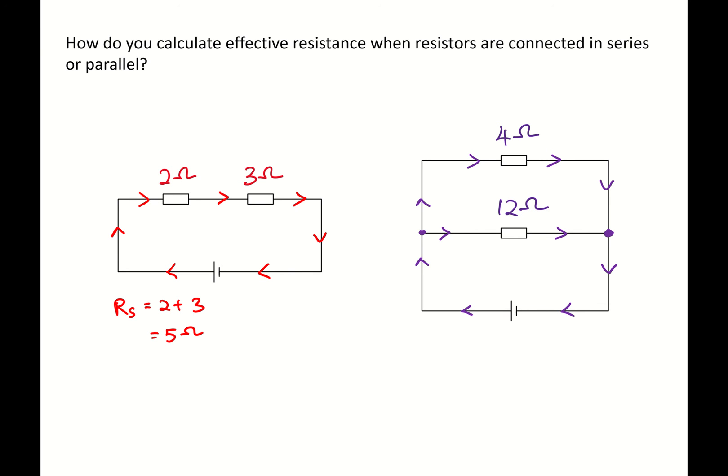And so we apply the formula for resistors connected in parallel and that's 1 over Rp equals 1 over 4 plus 1 over 12.